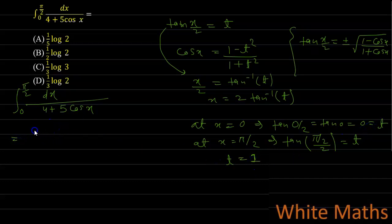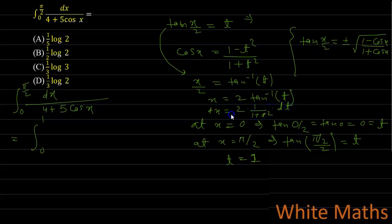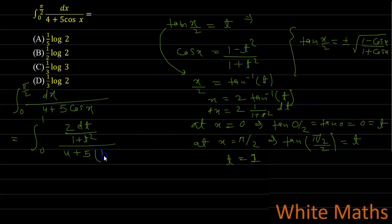The integral in terms of t will have limits 0 to 1. For dx: since x = 2tan⁻¹t, differentiating both sides gives dx = 2/(1 + t²) dt. In the denominator, 4 + 5cosx becomes 4 + 5·(1 − t²)/(1 + t²).